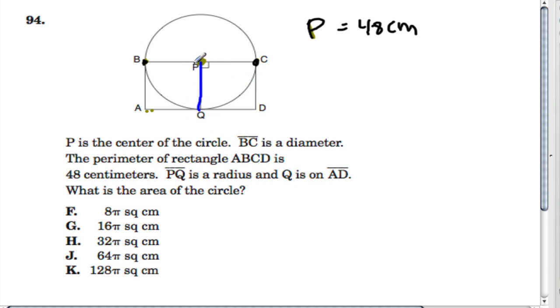And our last clue is that PQ is a radius. They say that right here. Okay, so this is a rectangle. That means that PQ equals BA and CD. Rectangles don't bend down in the middle. That's not how they work. So they're all equal distances.